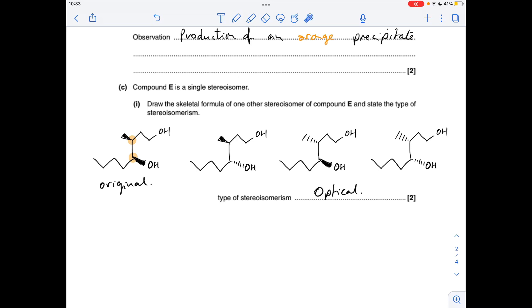Part C: the type of isomerism. We'll start with optical isomerism, and that's because we've got two chiral centers in the molecule. This is the original structure. I've just copied it out again. I've given all the possible answers you could give for this.